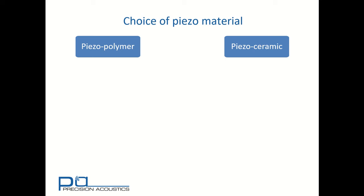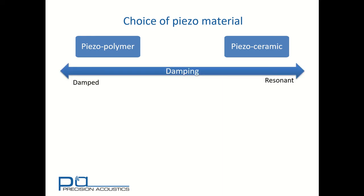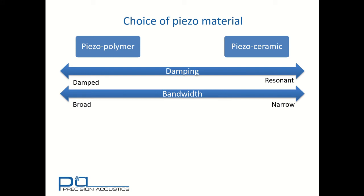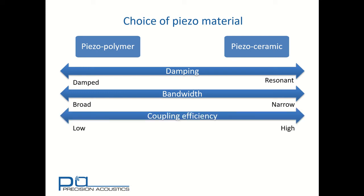It's also useful to see how the choice of piezo material fits within this. We've already mentioned piezopolymers and piezoceramics, but let's look at some of the other aspects. Clearly, we've mentioned that piezopolymers are highly damped and piezoceramics can be highly resonant. We've also seen that the bandwidth is narrowband for a resonant device and much broader band for a damped device. And because we've lost energy into heating, the coupling efficiency tends to be much higher for a piezoceramic device and much lower for a piezopolymer. In this context, we're talking about the coupling from electrical energy to mechanical energy.